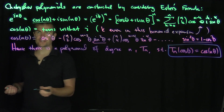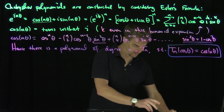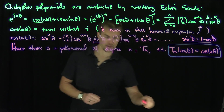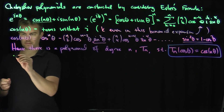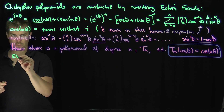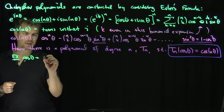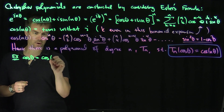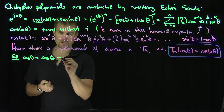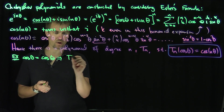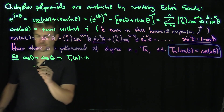Let's do a few simple examples. When n=1, cosine(theta) = cosine(theta), so T_1(x) = x.